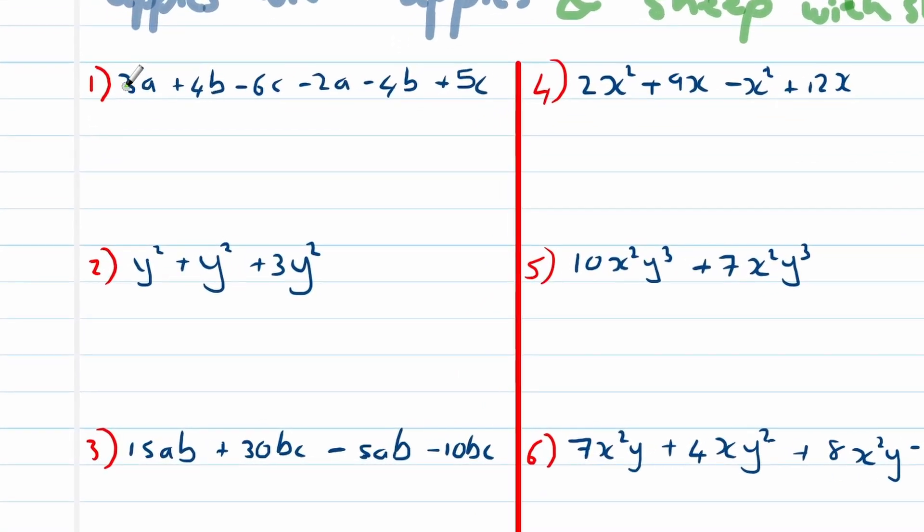So first of all, we've got 3a. Now a is a variable, 3 is its coefficient. So now let's see if there's other a terms here. There's 3a and minus 2a. Let's see if we've got other b's here: 4b and a 4b. Let's look at the c's: there's a c and there's a c. Those that I've highlighted in a specific color, those are like terms.